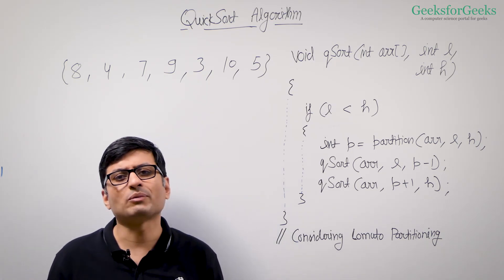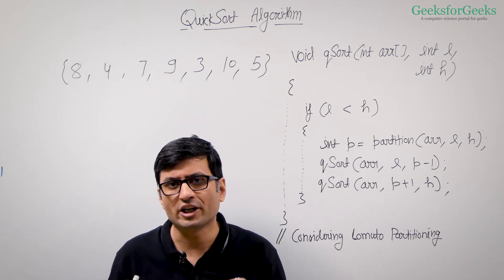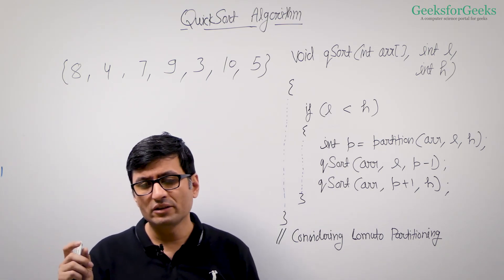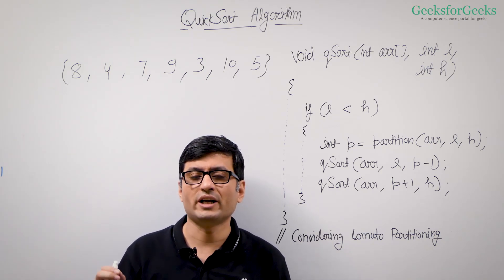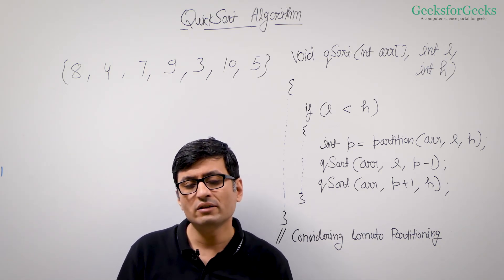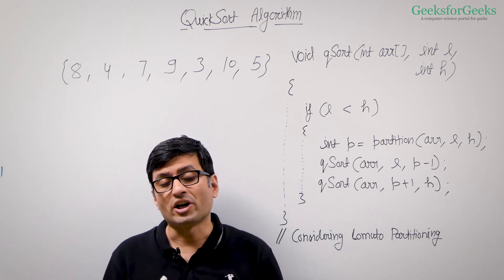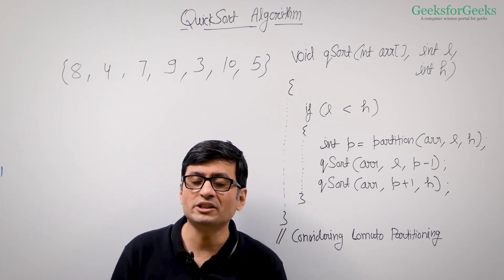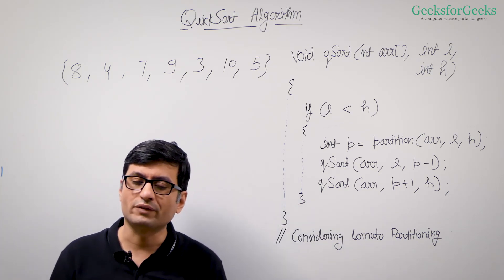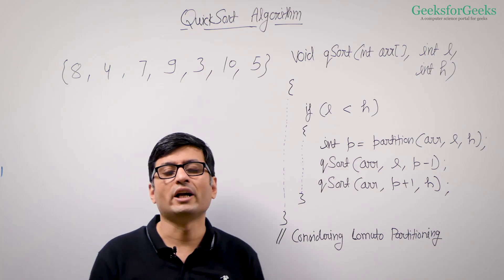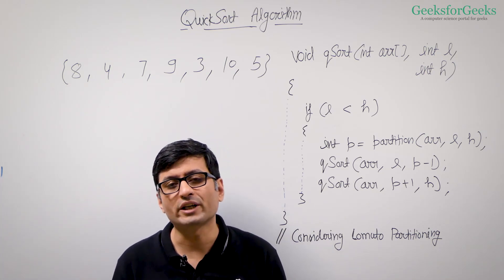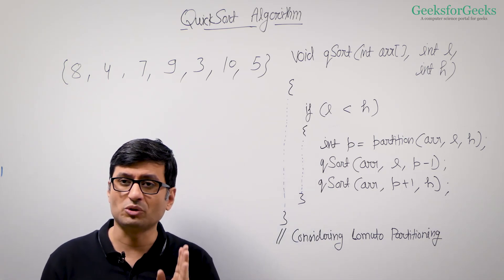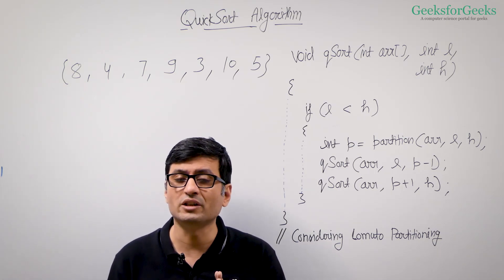Let us do a recap of Lomuto partition. What Lomuto partition does: you give it an array, it takes the last element, puts this last element at its correct position, and then returns that position. When we say it puts that element at its correct position, it means all the elements on the left of it are smaller than or equal to this element and all the elements on the right of it are greater than or equal to this element.